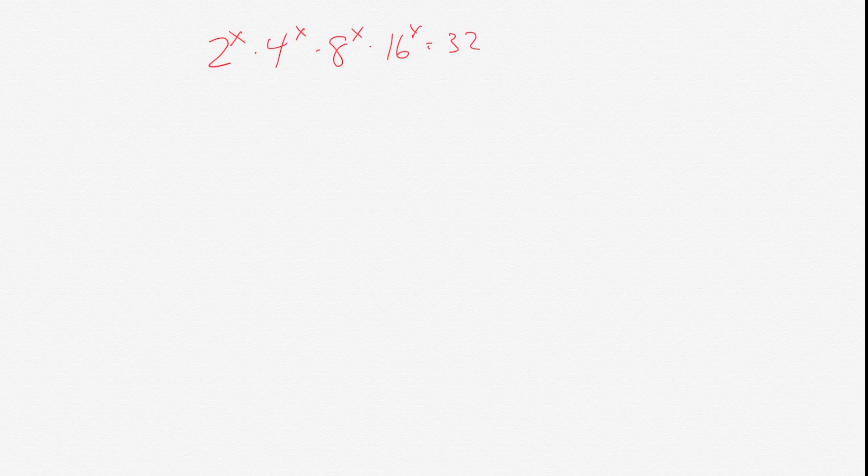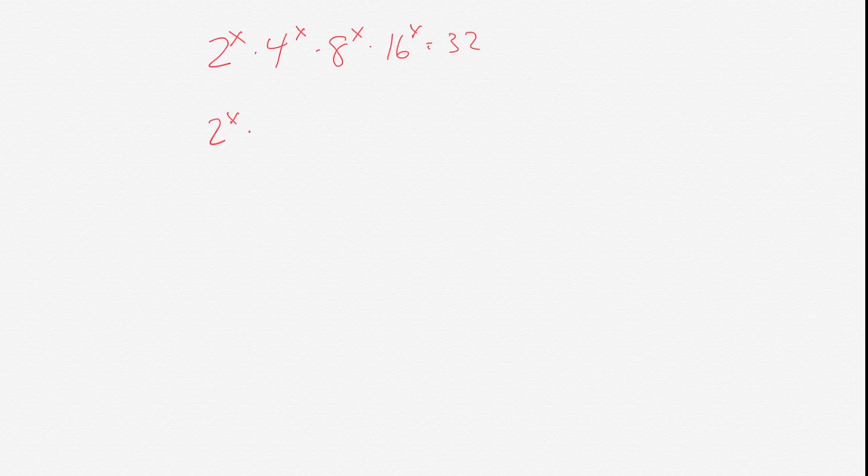We have 2 to the x times 4 to the x times 8 to the x times 16 to the x equals 32. Whenever we have a question like this, we want to simplify each number to the same base. Since every number here is an exponential of 2, the base should be 2.